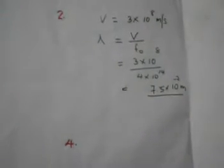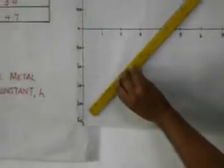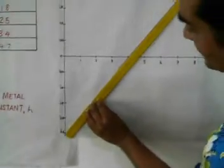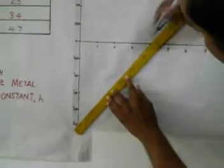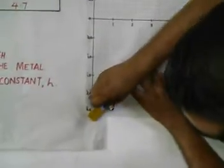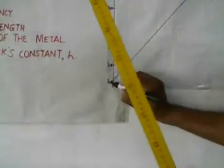The third thing we are going to find is the work function of the metal. In order to find the work function, we will extrapolate this graph. Upon extrapolating, we notice that the line cuts the y-axis at about 2.4, so it is 2.4 × 10⁻¹⁹ joules — that is the work function, the minimum energy required for an electron to leave the metal surface.